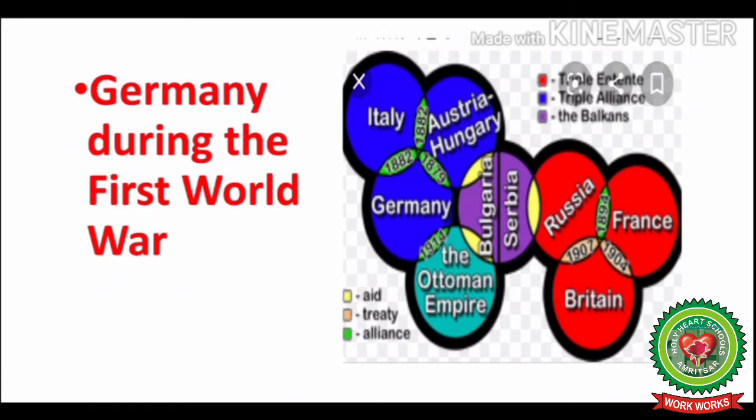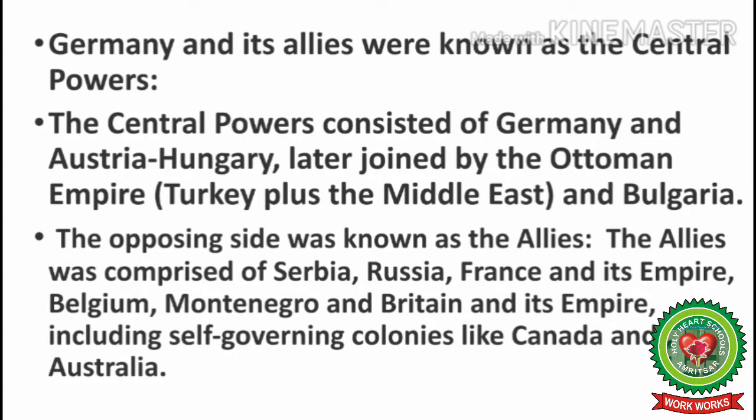Let us now discuss Germany's condition during the First World War. Germany and its allies were called the Central Powers, consisting of Germany as the main country, along with Austria-Hungary, later joined by the Ottoman Empire (Turkey) and Bulgaria. The opposing side was known as the Allies, comprising Serbia, Russia, France and its empire, Belgium, Montenegro, and Britain and its empire including self-governing colonies like Canada and Australia.